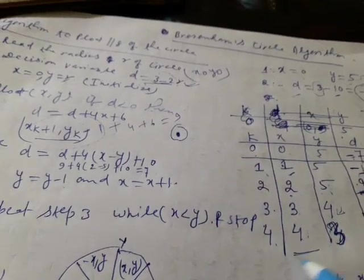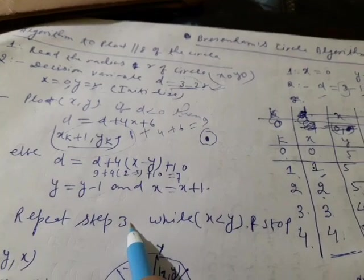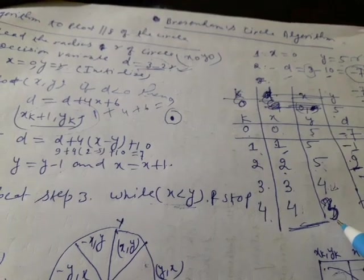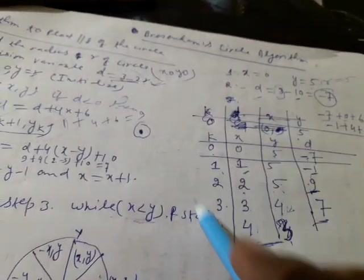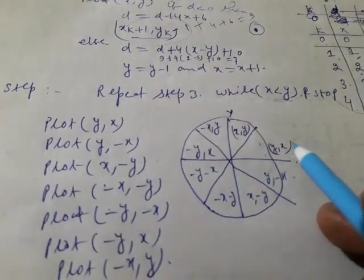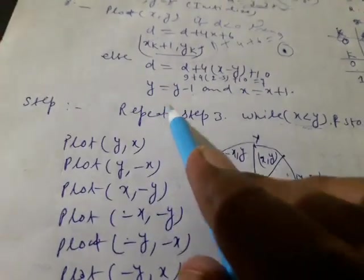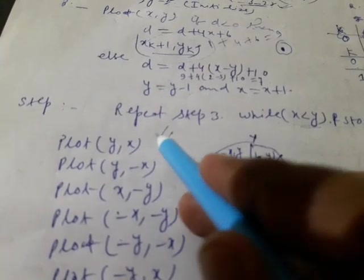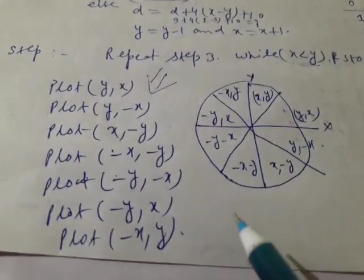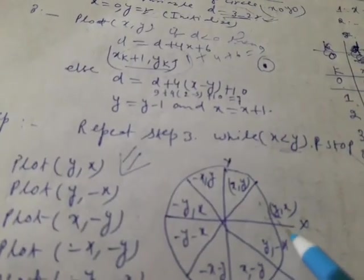The loop stops here because the condition is: repeat step 3 while x is less than y. Now x equals y equals 3, so this condition is no longer satisfied and we stop. This gives us the coordinates for 1/8 of the circle. If you want coordinates for all octants, you write symmetry relations like (y, x) and (y, -x) etc., and you can get results for the full circle.